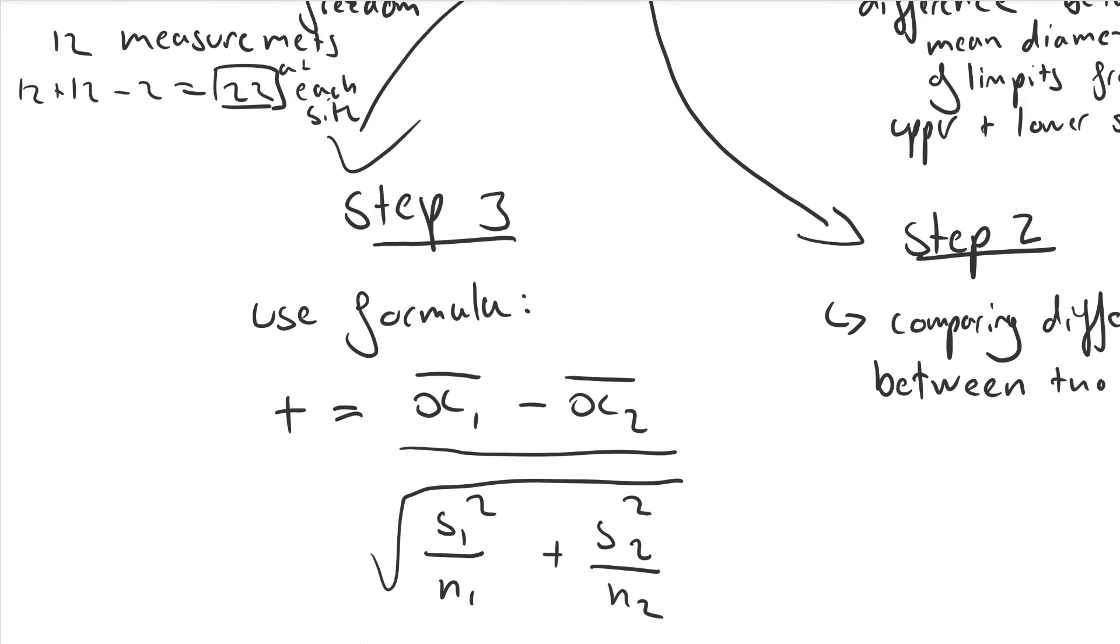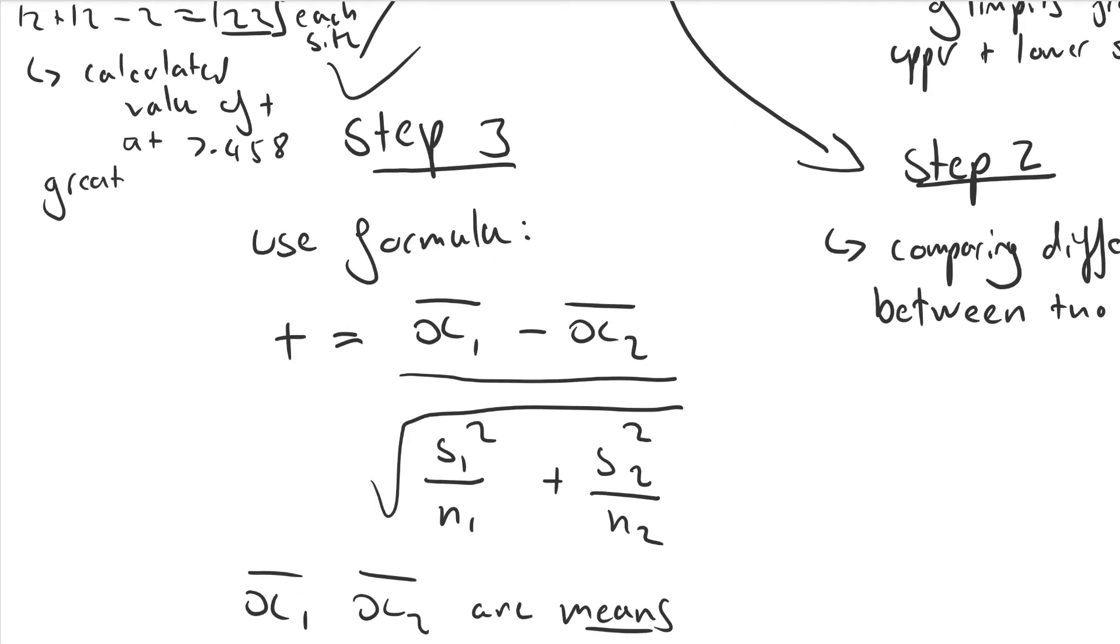So we calculate our degrees of freedom just there, which is 22. And we've got our value of t. Let's say our value of t has been calculated at 7.458.